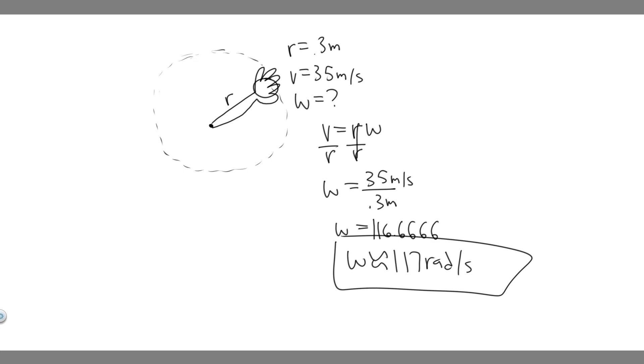This is going to be the angular velocity: 117 radians per second, that's the angular velocity of the forearm. So this is your answer and hopefully you found this useful.